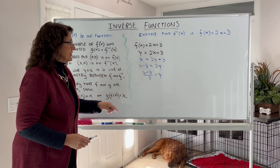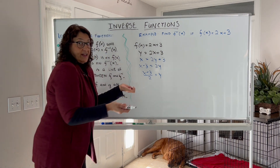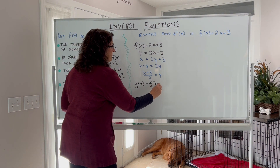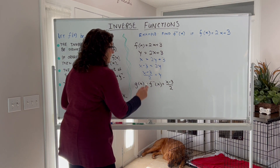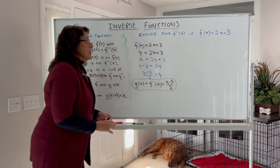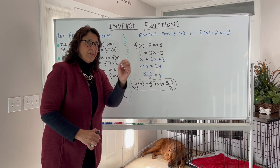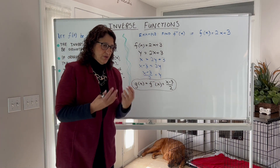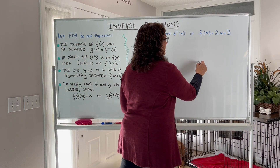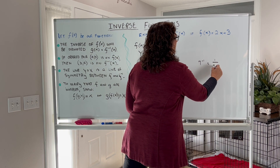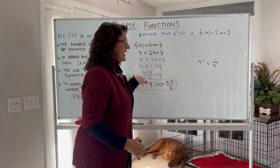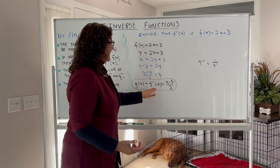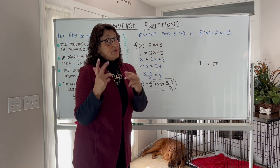We'll call it g of x, or f inverse of x. Note that the inverse function notation uses a negative one power, but it's not the reciprocal. Don't mix up the inverse with the reciprocal of a function. For example, 7 to the negative one means 1 over 7 — that's a reciprocal. But when you put the negative one on a function, it means inverse, not reciprocal. The inverse of 2x plus 3 is not 1 over 2x plus 3.